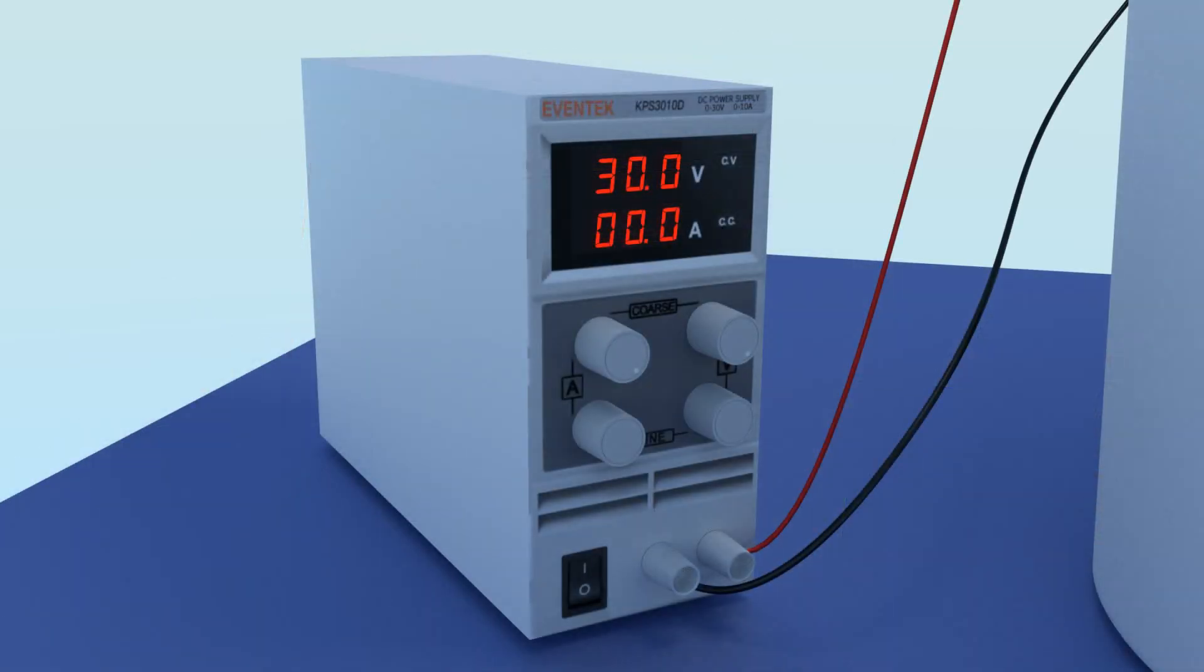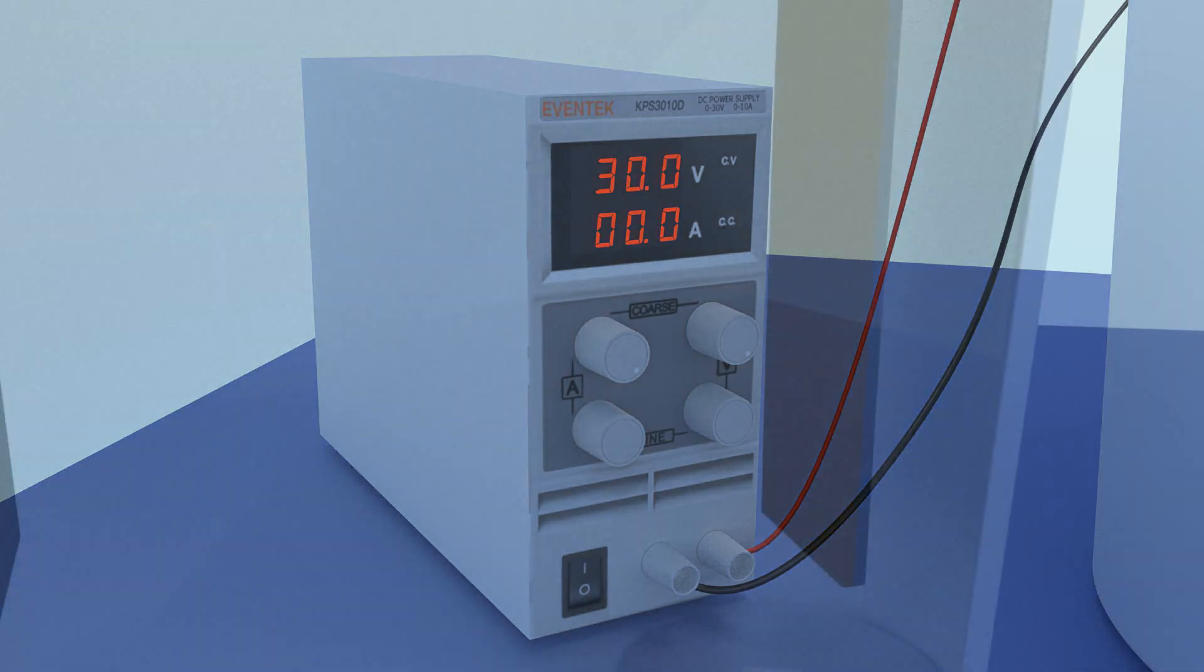When the amp gauge reads zero, the solution should become colorless. All the metal has plated out of solution. You can then recover the metal and discard the solution.